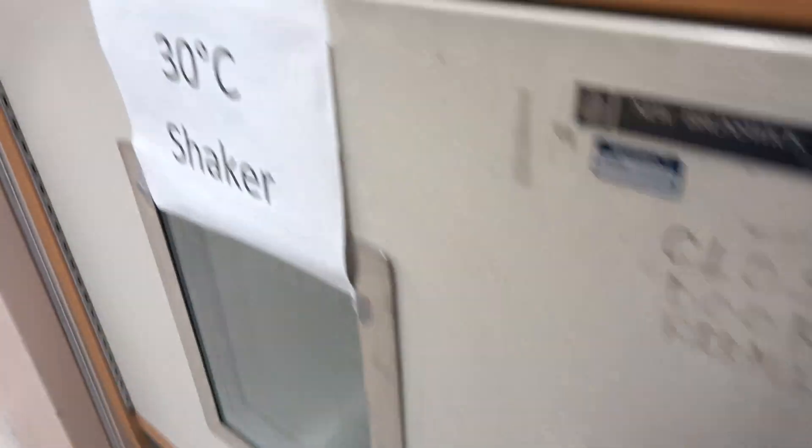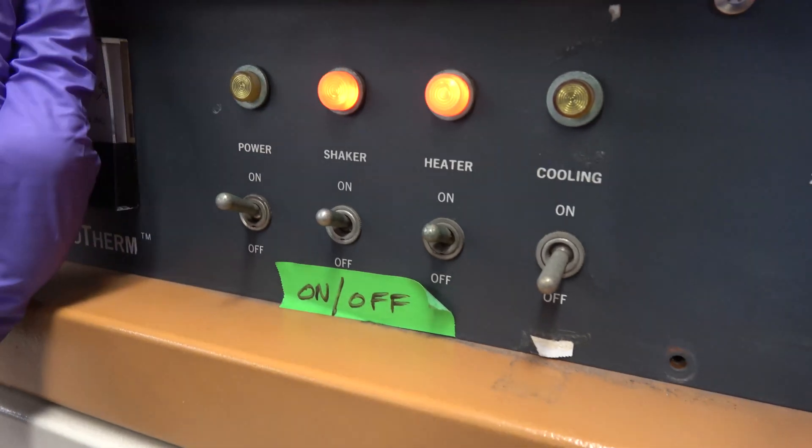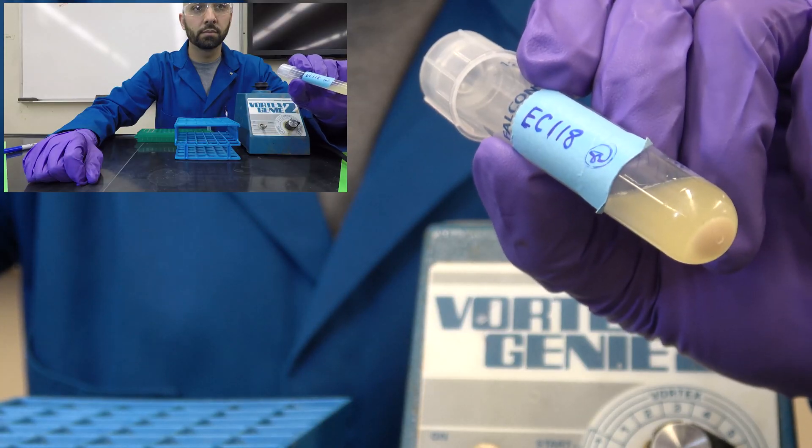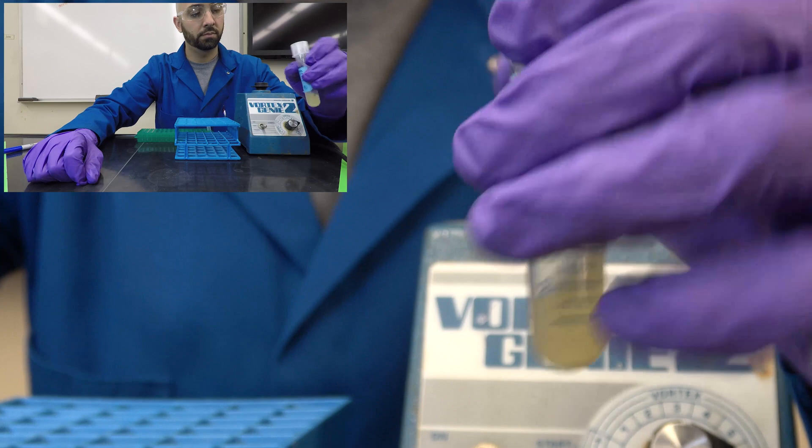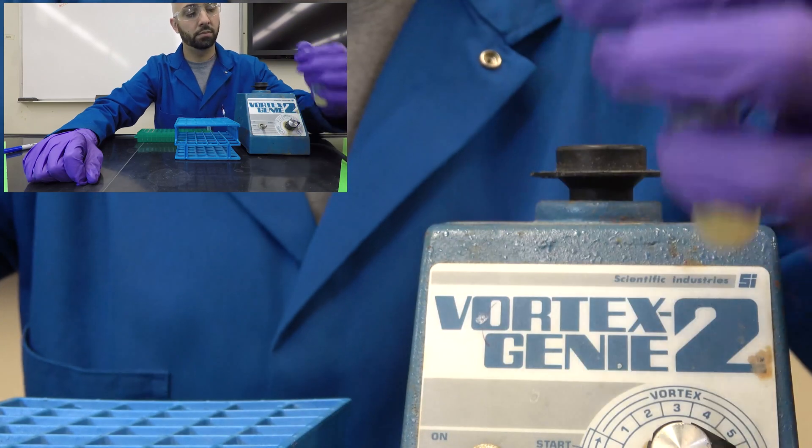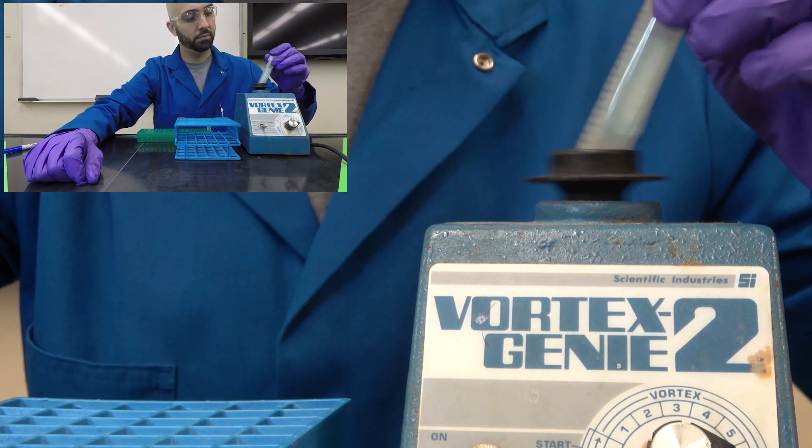The following day, you'll notice that some yeast have settled on to the bottom, so we'll need to use a vortexer to homogenize the solution. These culture tubes have two lid positions, so we'll press down to seal the tube before mixing.